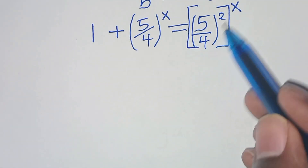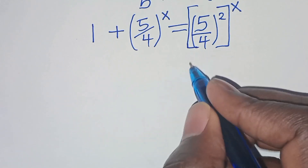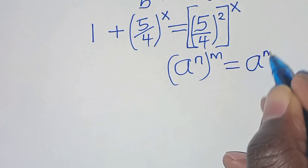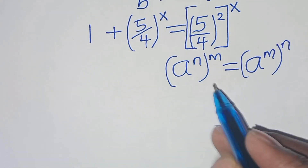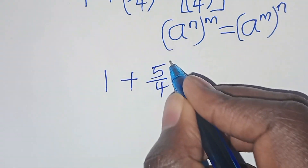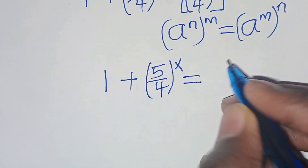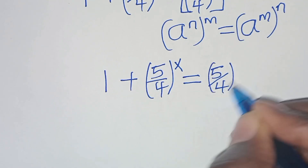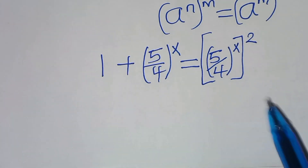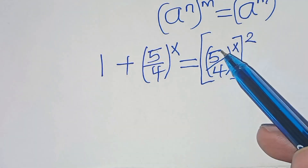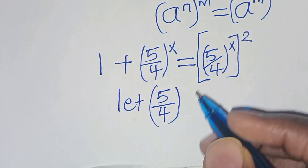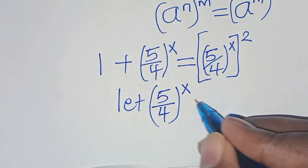Now (5 over 4) raised to power 2 raised to power x is in the form of a to power m raised to power n. Applying this property, we have 1 plus (5 over 4) raised to power x equals (5 over 4) raised to power x, all squared. Since (5 over 4)^x appears on both sides, let (5 over 4) raised to power x equal m.